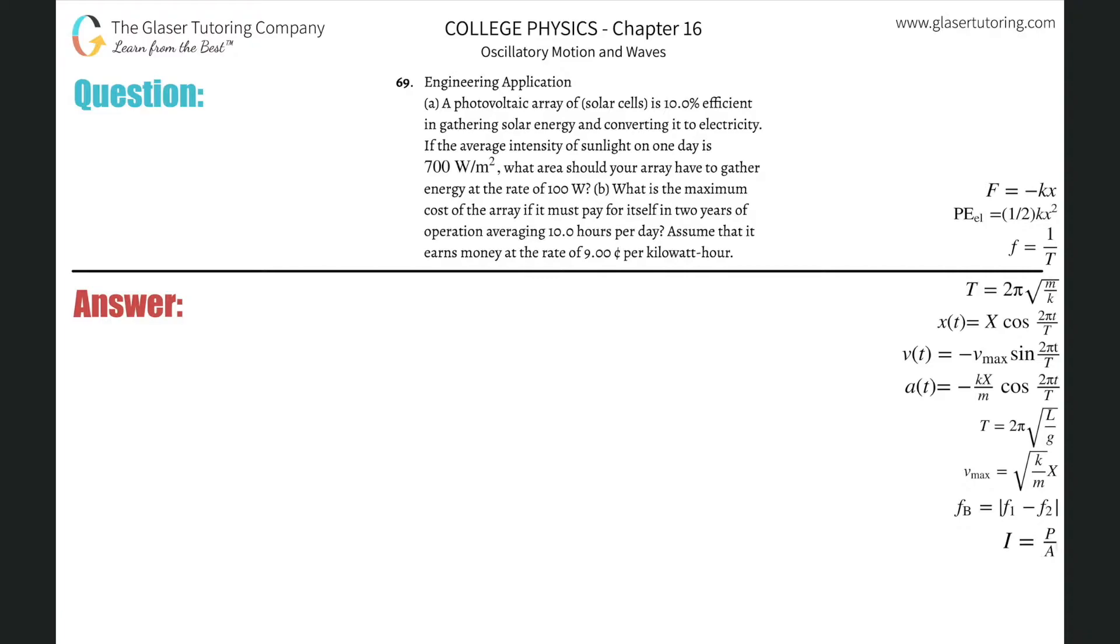Number 69, engineering application letter A. A photovoltaic array of solar cells is 10% efficient in gathering solar energy and converting it into electricity. If the average intensity of sunlight on one day is 700 watts per meter squared, what area should your array have to gather energy at the rate of 100 watts?